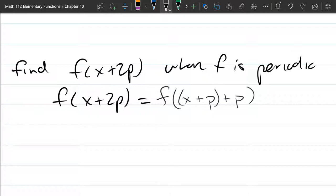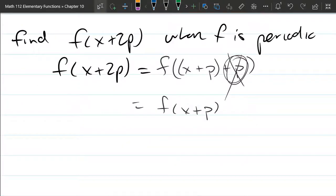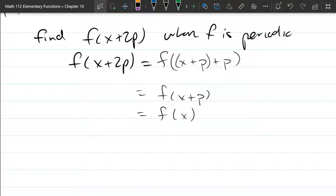And I want to think about this as grouping up this first input with the second, the plus P outside. Now that periodic property says if you add a P, it's the same thing as not having it. So that means on the next line, we can write this as just f of X plus P. That was applying the periodic property once. Applying that periodic property a second time, because we have an input plus P, it's just f of X.